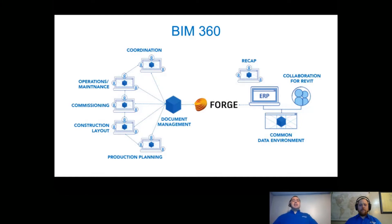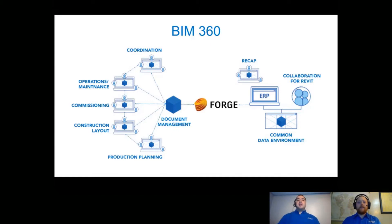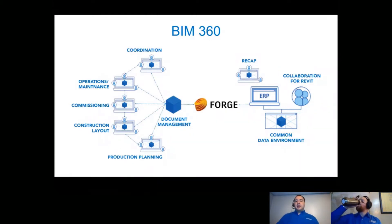So with BIM 360, as I stated in the previous episode, it is a single source of truth — a common data environment, file repository, whatever term you prefer. Essentially it's a container that houses all of your files and documents and models. Any file format you want essentially lives in this container, and that container lives on a set of APIs called Forge. Forge allows us to push and pull data and interact with other softwares, ERPs, and that sort of stuff.